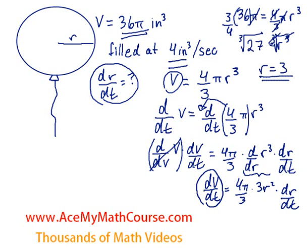Excellent. So now we can plug in. Okay, so dV/dt is just 4, so we have 4 equals 4π/3 times 3r². Now we found out that r is 3 at the very moment that the volume is 36π, of course, times dr/dt.